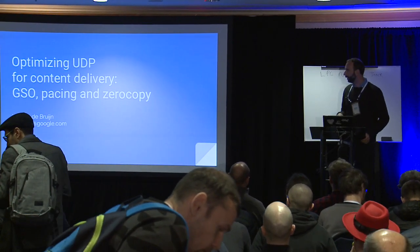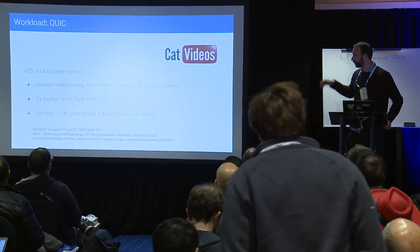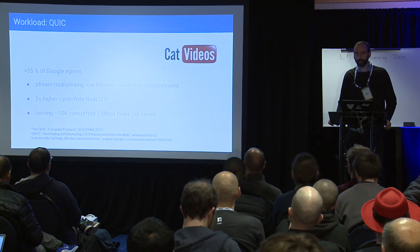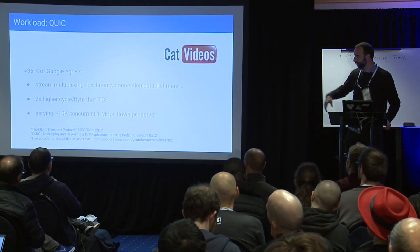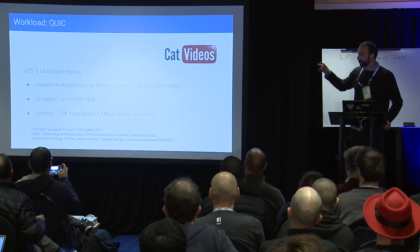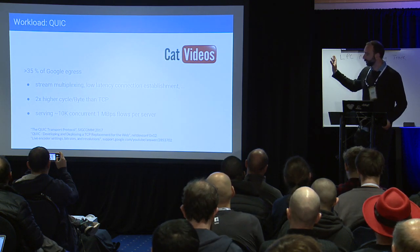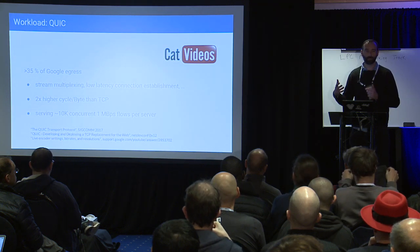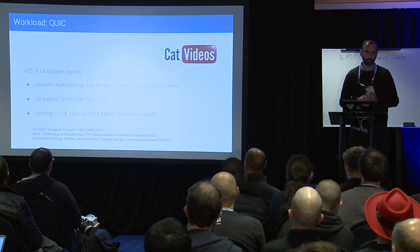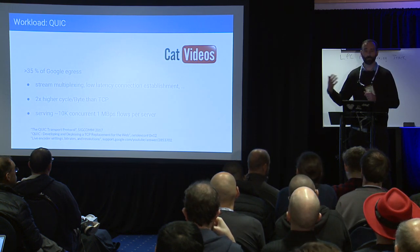Let's have a look at some recent UDP stack optimizations, specifically for delivering content across the internet at scale. As David alluded to, this work is inspired by QUIC. This is not a talk about QUIC — at the bottom you can see two links to recent QUIC presentations and papers. What's relevant here is that it's a reliable transport protocol on top of UDP that showed some qualitative benefits when we converted Google egress traffic from TCP to QUIC. About 35% of Google egress is now over QUIC instead of TCP.